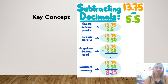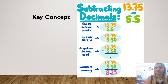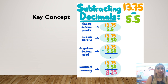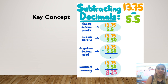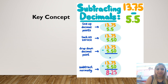This is our summary and key concept for subtraction. First, line up the decimal points — it's very important to line them up on top of each other. Second, track zeros: don't forget to put zeros, especially when you want to regroup. Third, drop down the decimal point in the same place — don't change its place. Then subtract normally as you do with whole numbers.